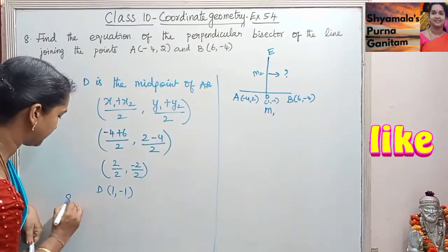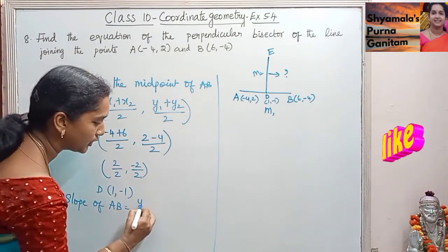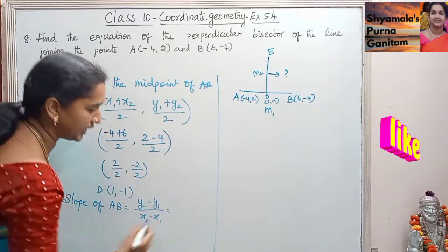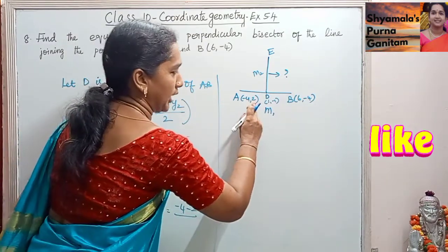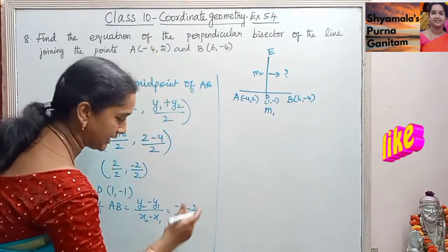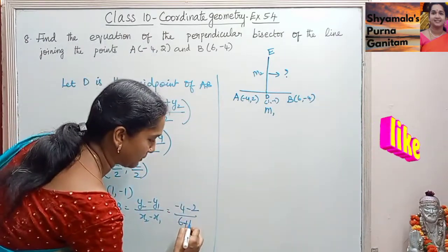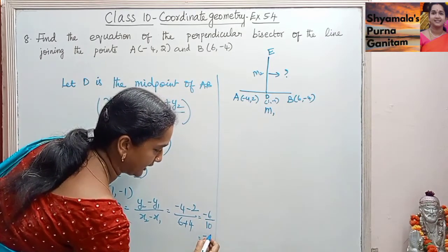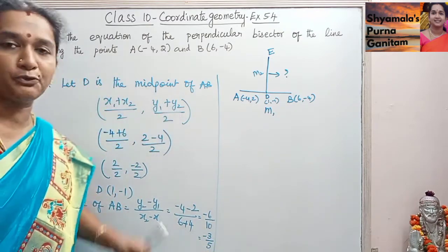Slope of AB = (Y2 - Y1)/(X2 - X1). Here Y2 = -4, Y1 = 2, X2 = 6, X1 = -4. So slope = (-4 - 2)/(6 + 4) = -6/10. When we simplify this, we get -3/5. So this is the slope of AB.